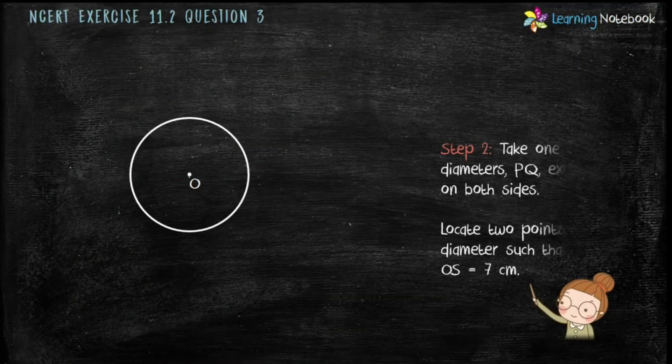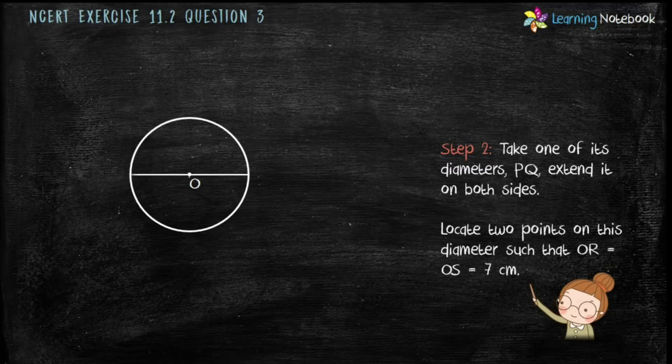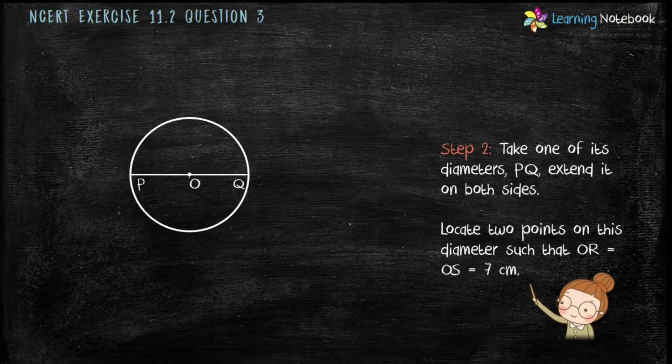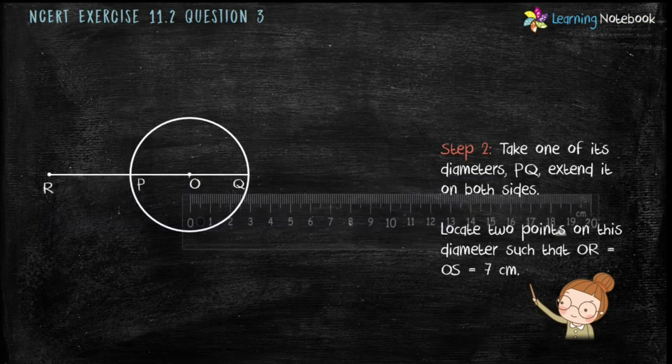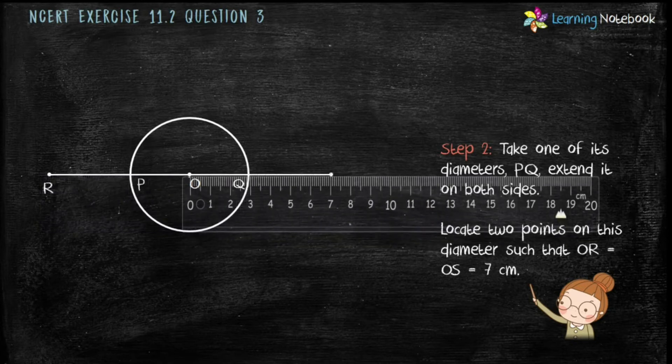Step 2 is take one of its diameters, name it PQ and extend it on both sides. Locate two points on this diameter such that OR equals to 7 cm and OS equals to 7 cm.